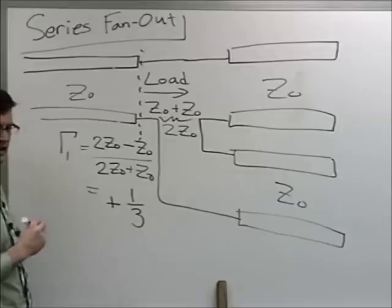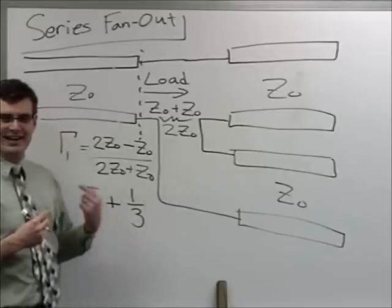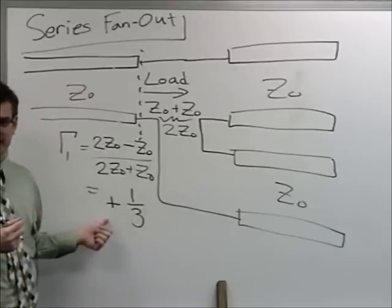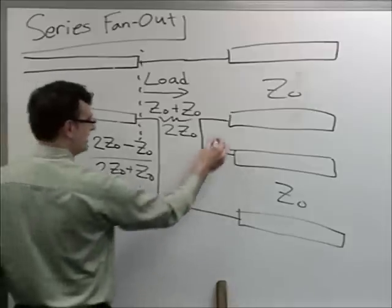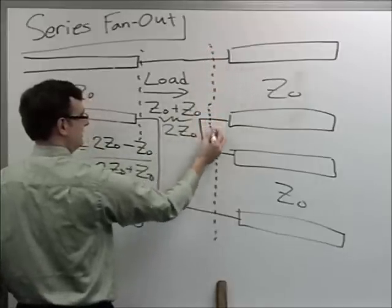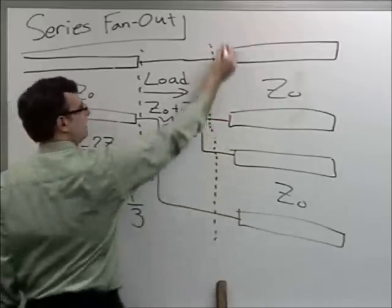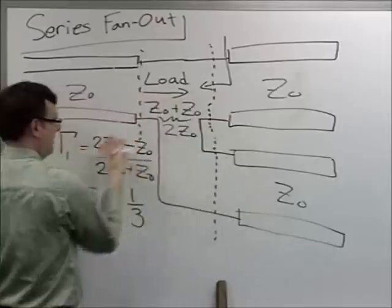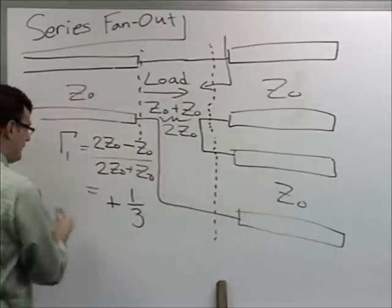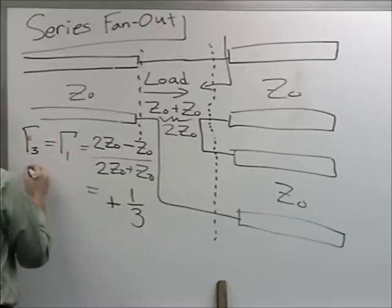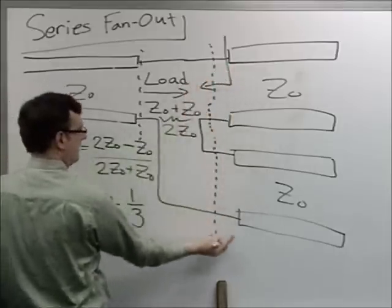The reflection coefficients at all three junctions of the series fan-out are the same magnitude. Whether you look into any of these junctions, you always see Z₀ in series with another Z₀, giving a load of 2Z₀ and a reflection coefficient of +1/3. It doesn't matter which line you feed the signal down — the reflection coefficient is the same.